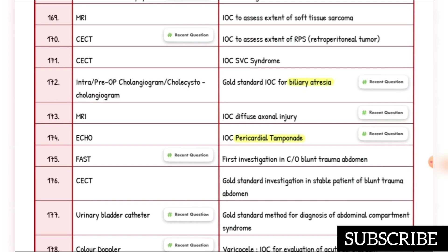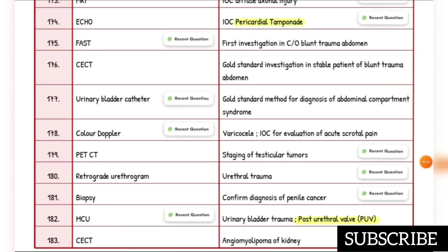First investigation and gold standard investigation in stable patients of blunt trauma abdomen is CECT. Gold standard method for diagnosis of abdominal compartment syndrome is urinary bladder catheter. Investigation of choice for evaluation of acute scrotal pain is color Doppler. Staging of testicular tumor: investigation of choice is CT.